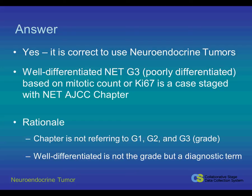The rationale is the Neuroendocrine Tumor Chapter is not referring to Grade 1, Grade 2, or Grade 3 as the traditional grade that we are familiar with, such as G3, poorly differentiated. Well-differentiated is not the grade, but it is a diagnostic term explaining the type of neuroendocrine tumor that it is.